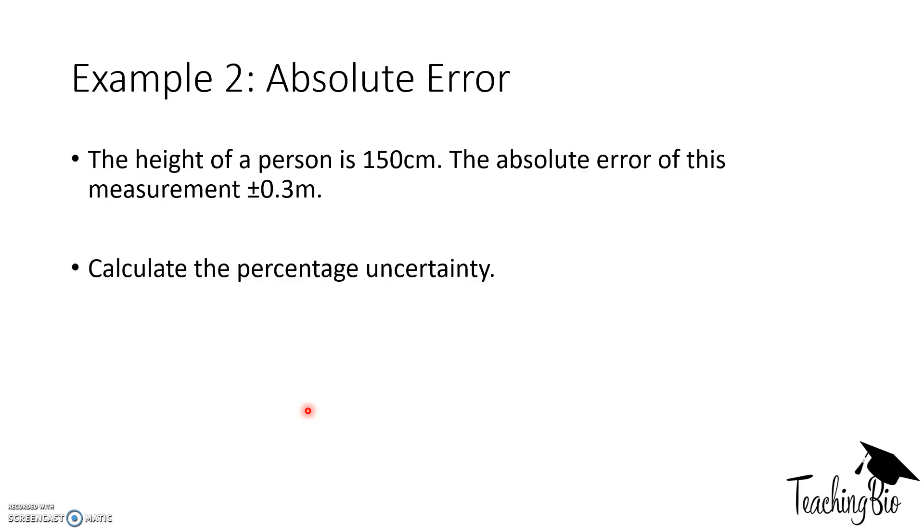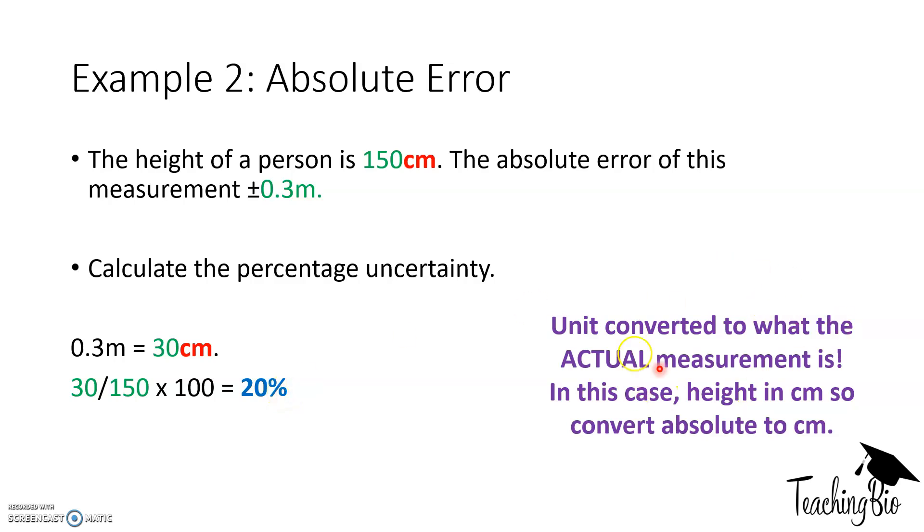Okay, here's another question. Again, similar process. We're going to take the absolute error and the true value. Now notice how this is in centimeters, this is in meters, so we need to get the same units. We're going to convert 0.3 meters into 30 centimeters because the actual height was in centimeters. Now we take the absolute error, which was 0.3 meters or 30 centimeters, divide that by the true value, times by 100. So again, we need to convert the unit into what the actual measurement was. As the height was in centimeters, we had to convert the absolute error into centimeters as well.